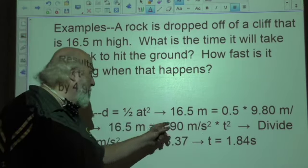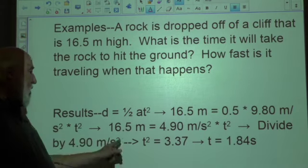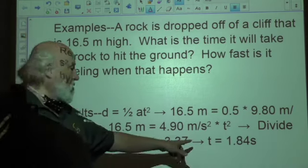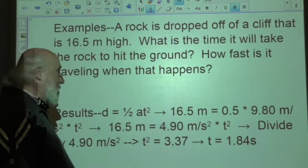And we're going to divide both sides by 4.90 to get t² by itself, and we get 3.37. We take the square root of both sides, and the time it takes for the rock to hit the bottom will be 1.84 seconds.